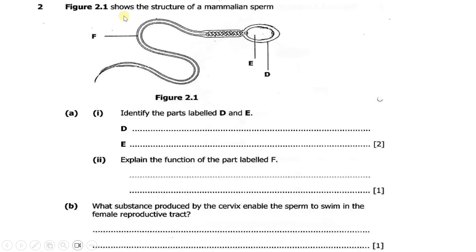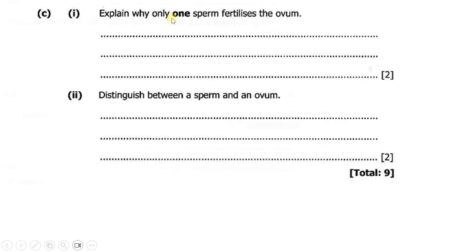Then question number 2 says: figure 2.1 shows the structure of a mammalian sperm. Part A, part 1: identify the parts labeled A, D, and E. Then part 2 says: explain the function of the part labeled F. Then B says: what substance produced by the cervix enables the sperm to swim in the female reproductive tract? Then C, part 1: explain why only one sperm fertilizes the ovum. Part 2: distinguish between a sperm and an ovum.